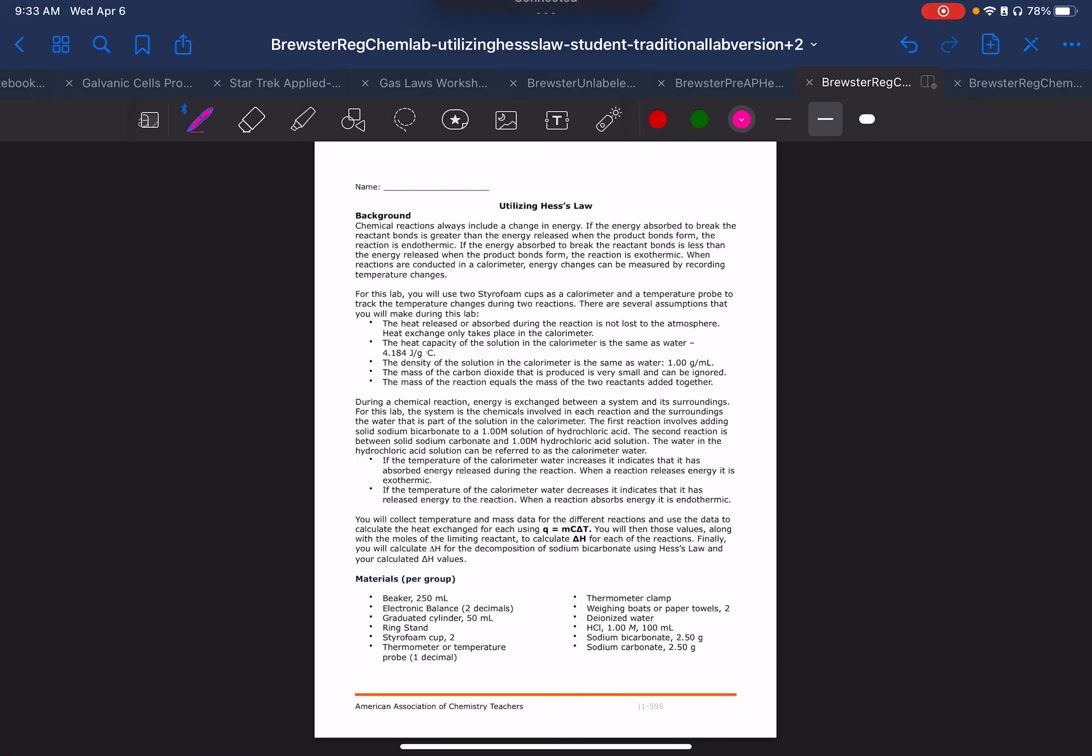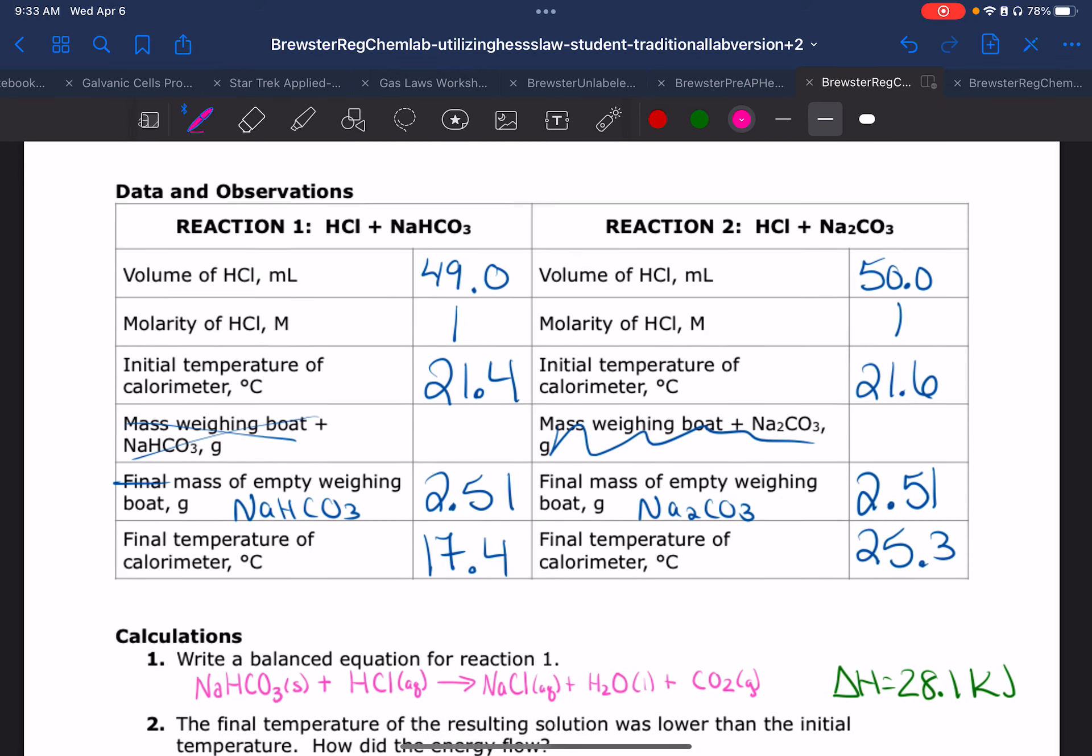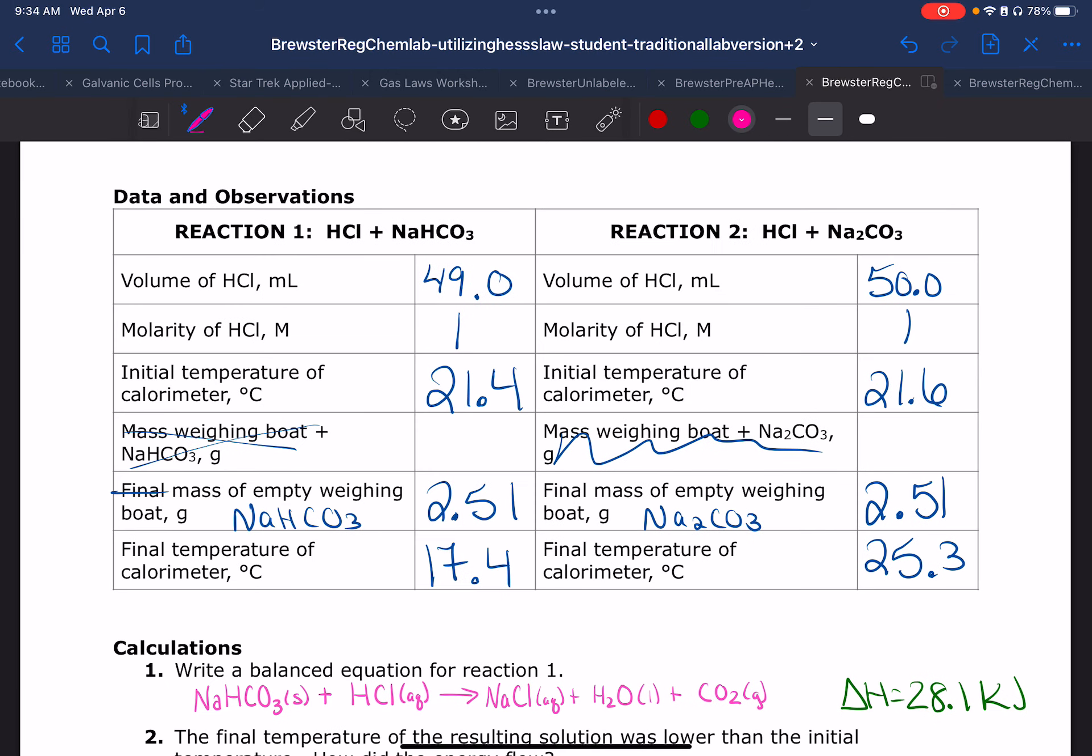Okay, this is utilizing Hess's law. I'll be showing the calculations that is somewhere between both classes, so this is what you should be doing for your calculations for utilizing Hess's law. Here is some example data for those of you who might need the data - maybe you weren't here, maybe your group didn't get all the way through, so you're more than welcome to use my data.